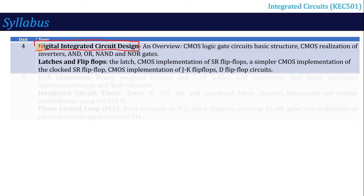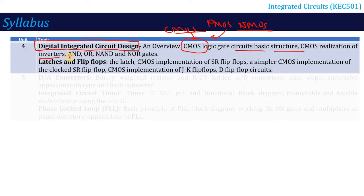In Unit 4, digital circuits, we first talk about CMOS logic gates. You will study CMOS, PMOS, and NMOS. Using the CMOS structure, you can implement NAND gate, NOR gate, AND gate, OR gate, and inverter. CMOS is emphasized because it requires very low power to build these circuits, making it the preferred technology for low-power design.